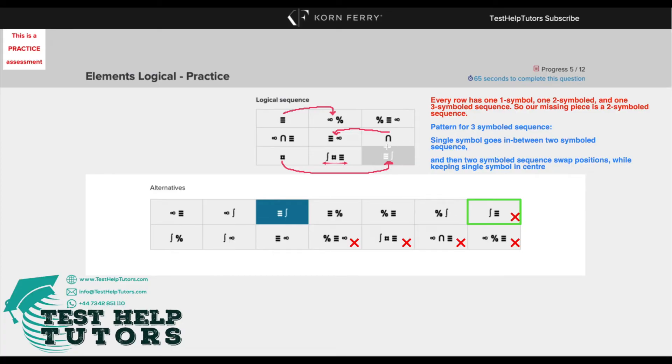So likewise, this N shape went into the middle between these two shapes, the three lines and the infinity symbol, and then the three lines and the infinity symbol switched positions here.